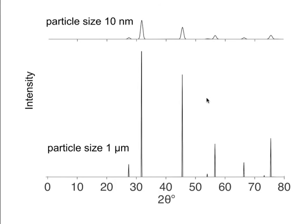The same effect occurs in x-ray diffraction: a powder with particle size of a micrometer gives extremely sharp peaks, whereas reducing the size to 10 nanometers causes the peaks to broaden out enormously. By measuring this peak broadening we can determine the size of crystals — this is the Scherrer method.